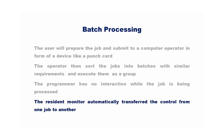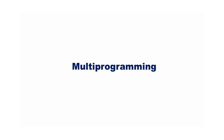The resident monitor, which was the first rudimentary operating system, automatically transferred the control from one job to another. When the jobs are processed sequentially, the CPU would sit idle when an input-output operation happens.